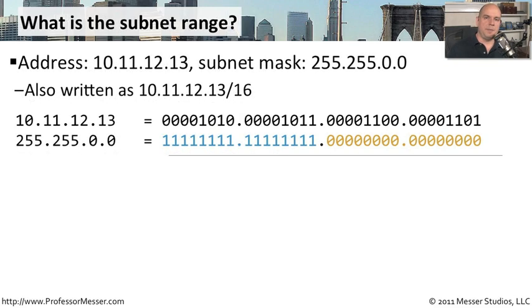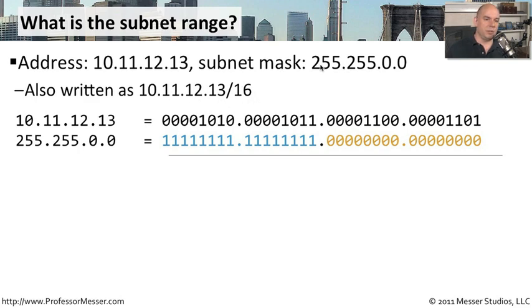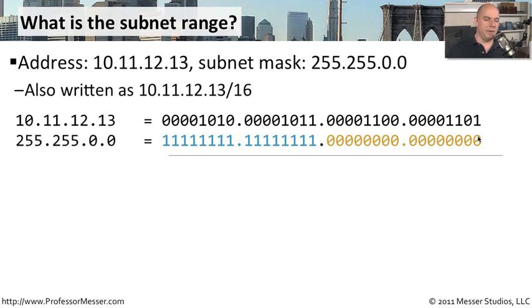Let's perform the same calculation with a different subnet mask. The address is 10.11.12.13, on a network with subnet mask 255.255.0.0. We can use CIDR notation to write this as 10.11.12.13/16, because we're using 16 bits of that subnet mask. If we write this out in binary form, 10.11.12.13 has its binary equivalent, and 255.255.0.0 is written out in binary here.